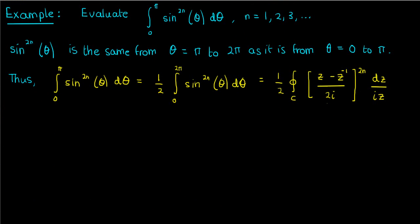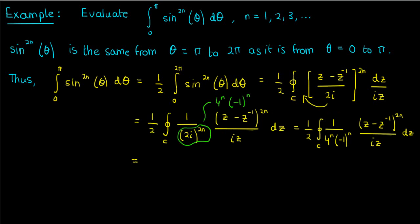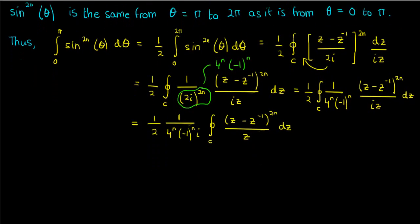This looks like a pretty complicated expression, but we can simplify it. Take out the 2i so you end up with 2i to the power 2n. Now the 2 to the power 2n can just be written as 4 to the n, while the i to the power 2n can be written as negative 1 to the power n. Let's take out all the constants from the integral and leave only the terms involving z. Now the z minus z inverse to the 2n terms seems pretty difficult to manage, but we can deal with it using the binomial theorem.